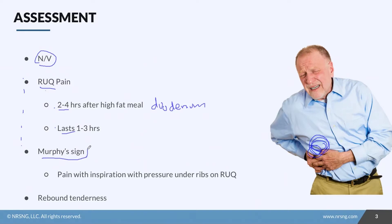You might also see something called Murphy's sign, which is pretty specific to gallbladder and liver disease. You press your fingers or hand up under the ribs on the right upper quadrant and ask the patient to take a deep breath. If the pain is so bad that they can't breathe in fully, that's going to be a positive Murphy's sign.